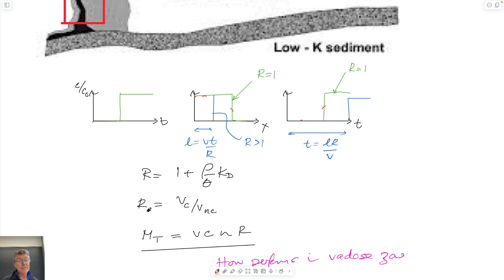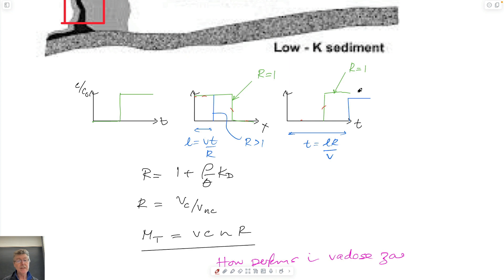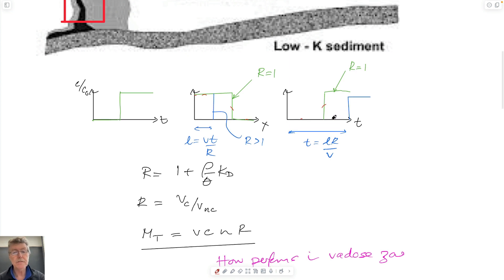The retardation factor is the ratio of the velocity for the conservative tracer divided by the velocity for the non-conservative tracer. Physically, what it means is that the front moves forward more slowly by a factor that reduces the length traveled by a factor of R, and the travel time is increased by that same factor of R. The height may also be reduced by attenuation as it sorbs onto the component.